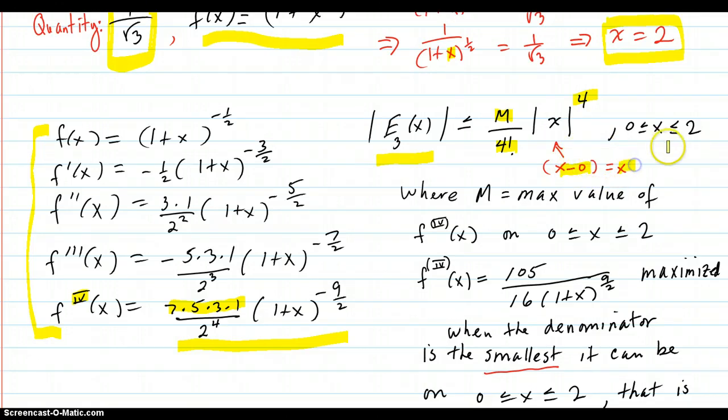So it's just x and we're bounding that error on the interval 0 to 2 because 2 is what was found there. So m is the max value of the fourth derivative of x on this. And the fourth derivative is this function right here.